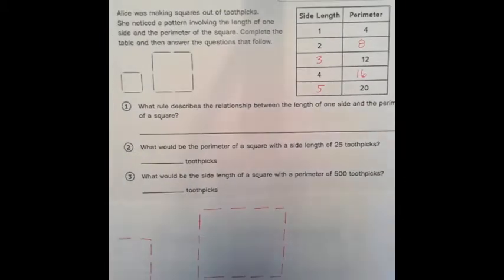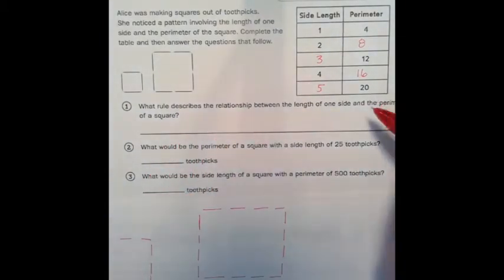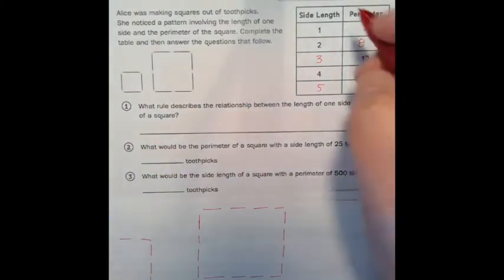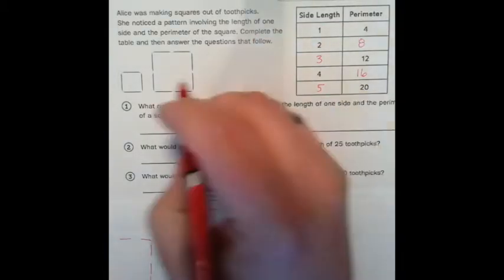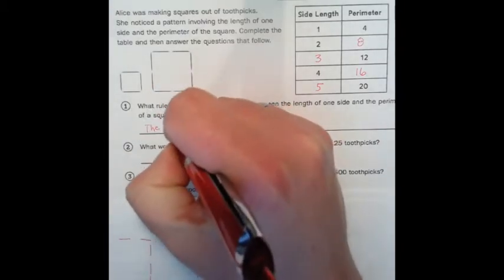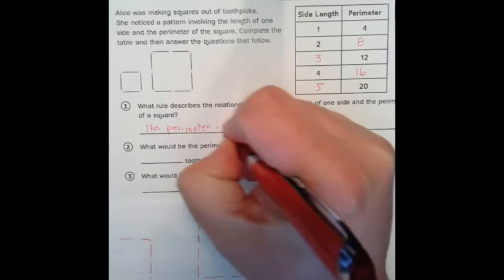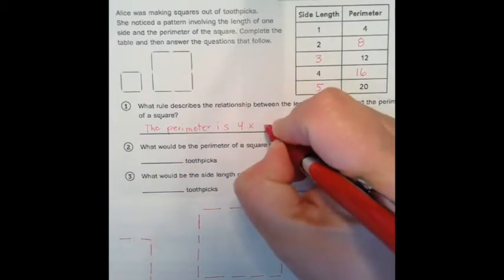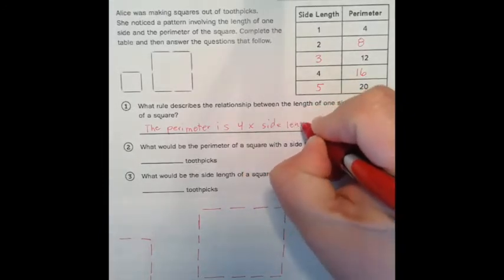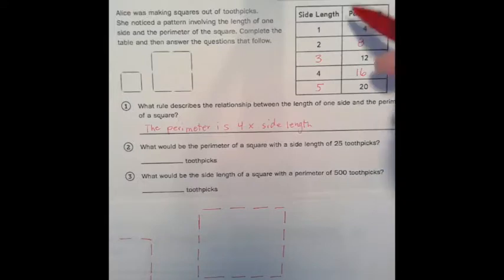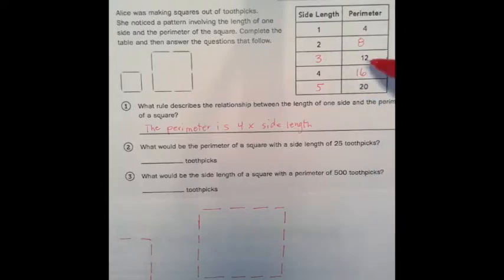So let's take a look here. Write a rule that describes the relationship between the length of one side and the perimeter of the square. Well, the perimeter is four times the side length. So if you look here, the side length is two. So you go four times two, that will be eight. And you go four times three, that's 12. Four times four is 16. Four times five is 20.